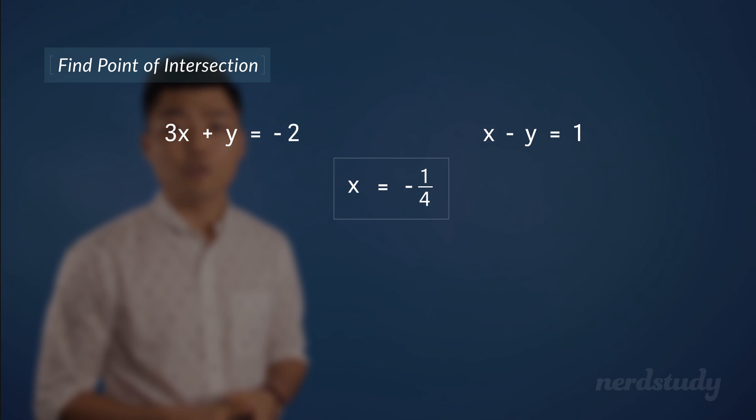Plugging in negative one over four into this equation gives us the following. Simplifying this gives us negative three over four plus y equals negative two. Now we add both sides by three over four and we get y equals three over four minus two, which is y equals negative five over four.